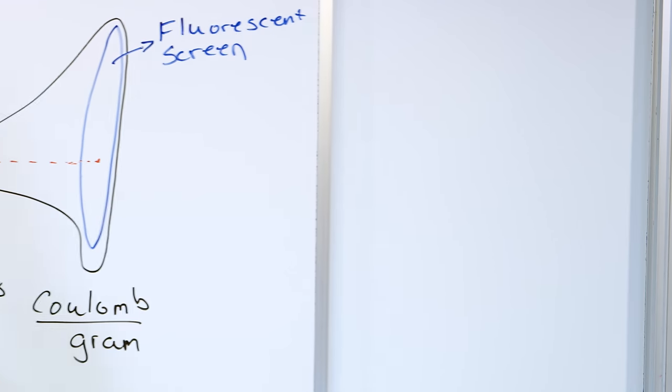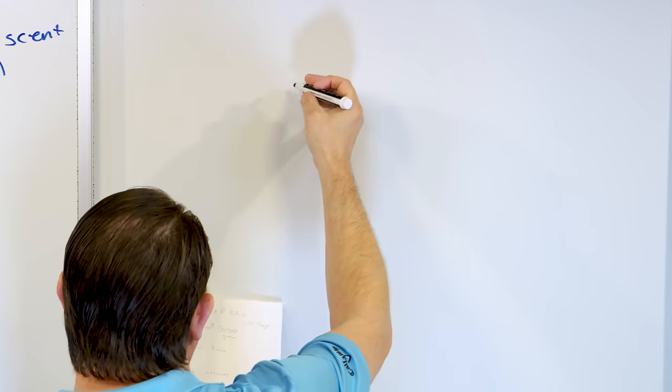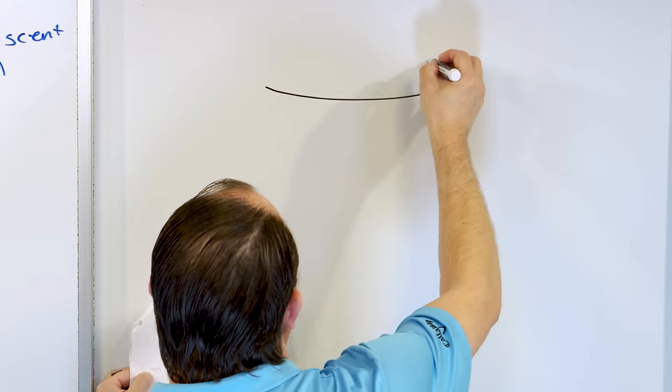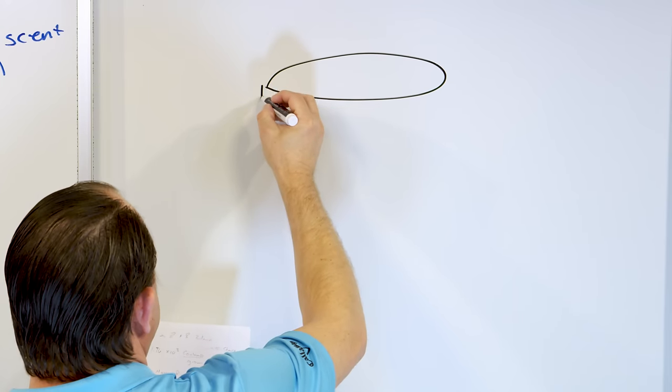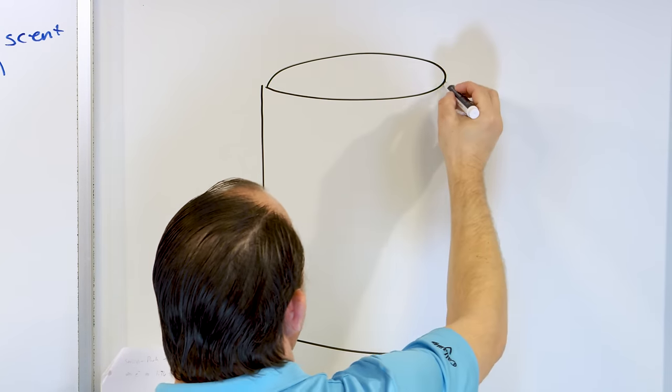Then in 1909 a famous experiment called the Millikan oil drop experiment was conducted. The purpose was to determine the exact charge on the electron — everybody now knew that cathode rays were electrons, and the most important thing to understand was what that charge actually was. A clever experiment using drops of oil was constructed.